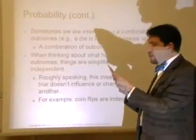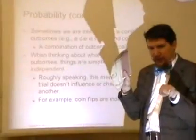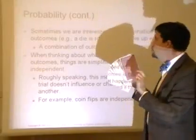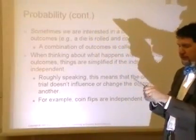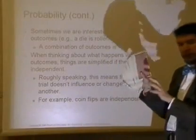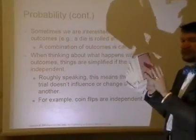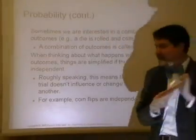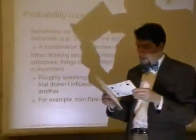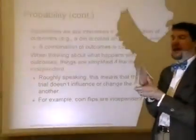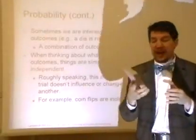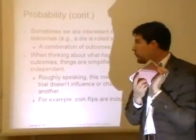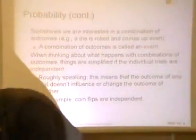Since the probabilities are different, the second event is dependent on what happened in the first event. If the probabilities are different, the second event is dependent on the first. However, you can make them independent by putting the card back — that's called 'with replacement,' which makes the two events independent of each other.